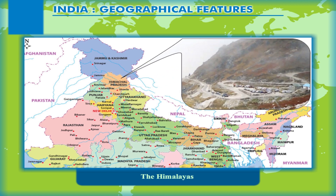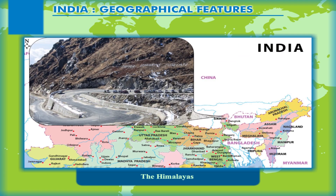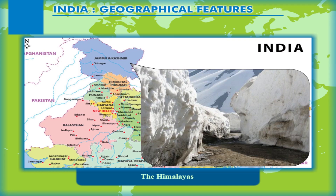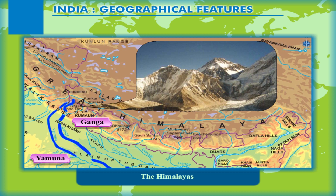Several passes also lie in this range at great elevation, namely Baralacha La and Shipki La in Himachal Pradesh, Thaga La, Niti and Lipu Lekh in Uttarakhand, Nathu La and Jelep La in Sikkim, and Bursil and Zoji La in Jammu and Kashmir. The Himadari is also the source of some important rivers like the Ganga from Gangotri Glacier and the Yamuna from the Yamunotri Glacier.